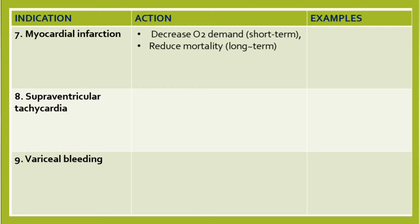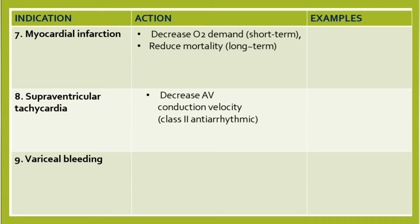The eighth indication is supraventricular tachycardia. Beta blockers decrease AV conduction velocity, so they are class II antiarrhythmics. Examples include metoprolol and esmolol.